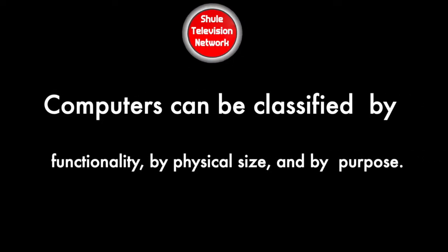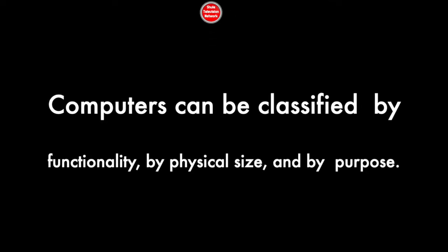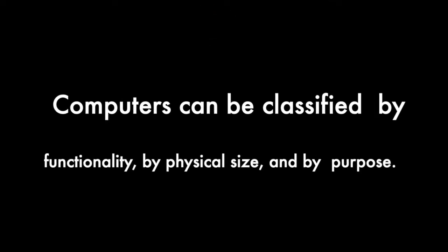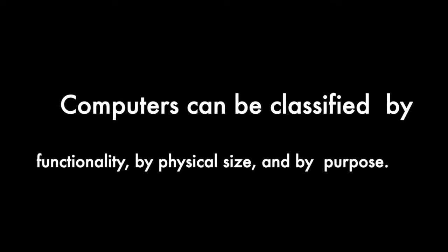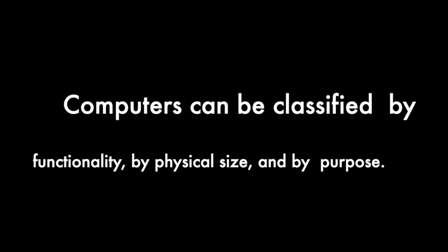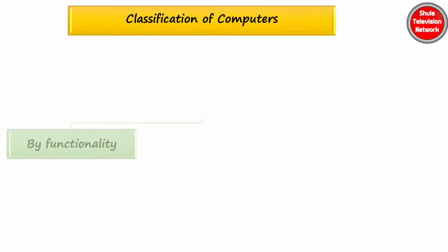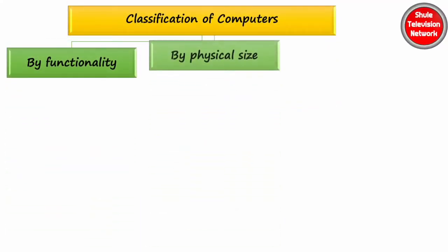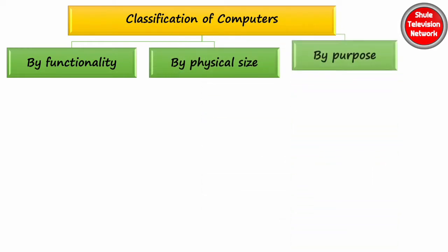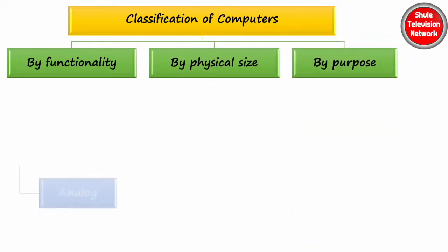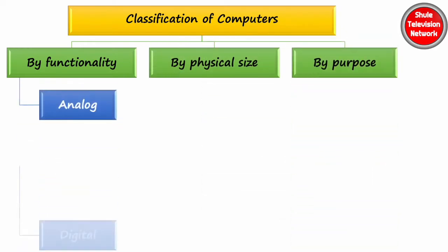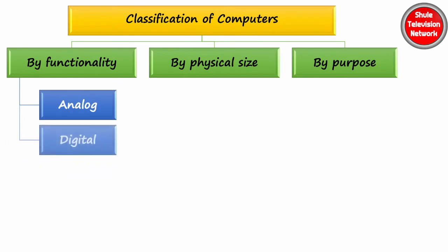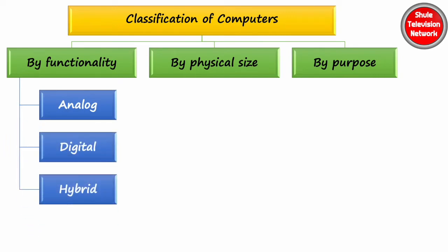Computers can be classified by functionality, by physical size, and by purpose. Classified by functionality, computers can either be analog, digital, or hybrid.